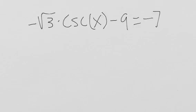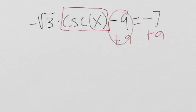Okay, so this one is different because we can actually isolate cosecant x here, no problem. To isolate, first we're going to add nine to both sides so these nines are gone.